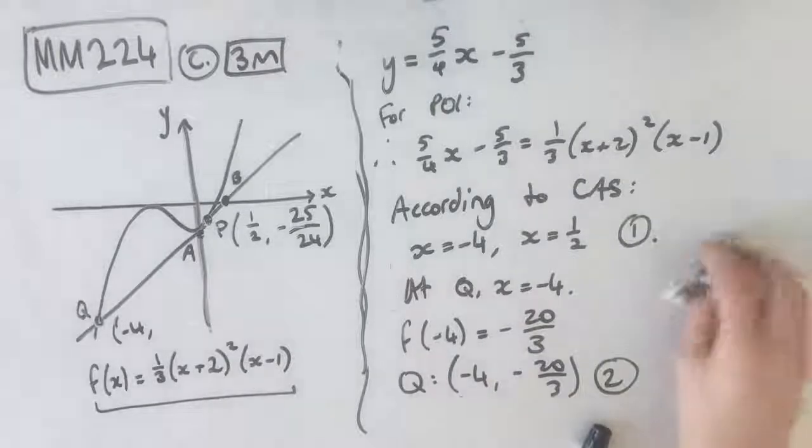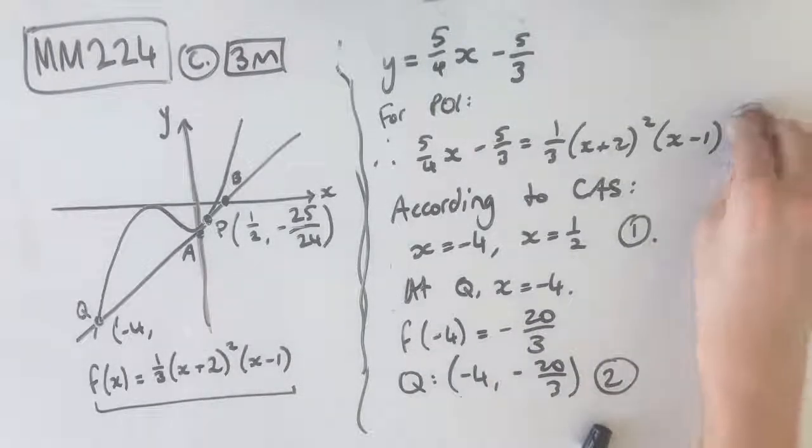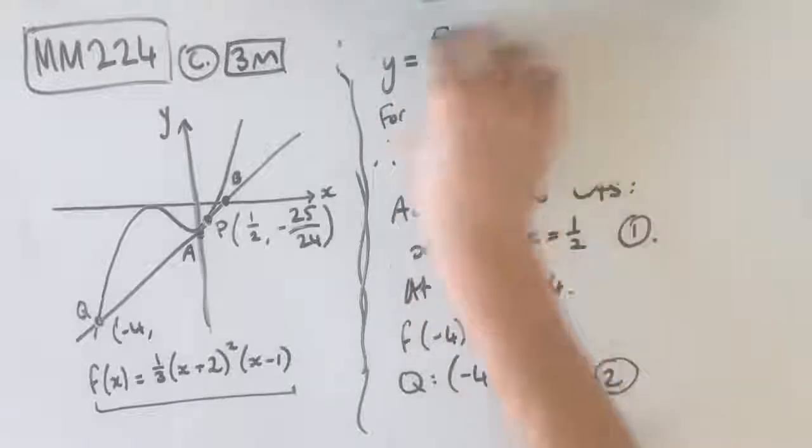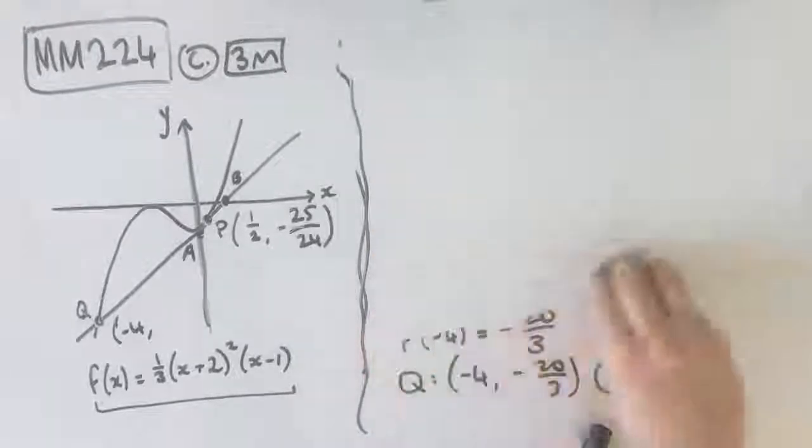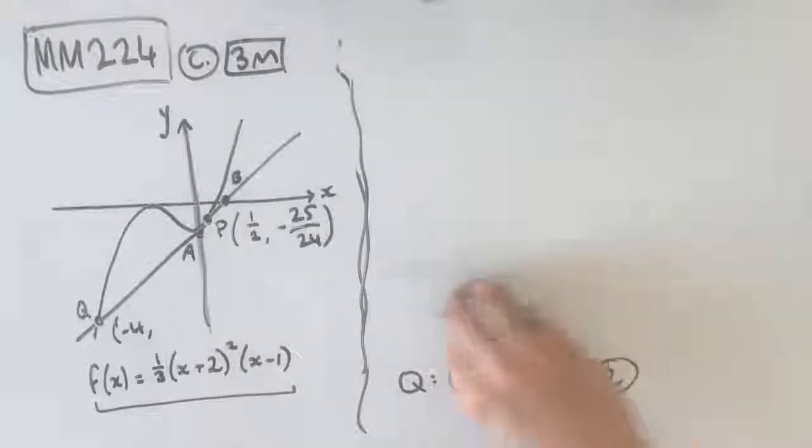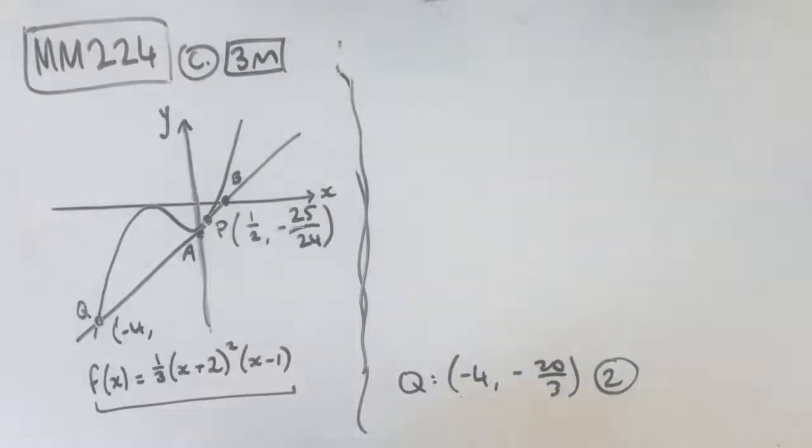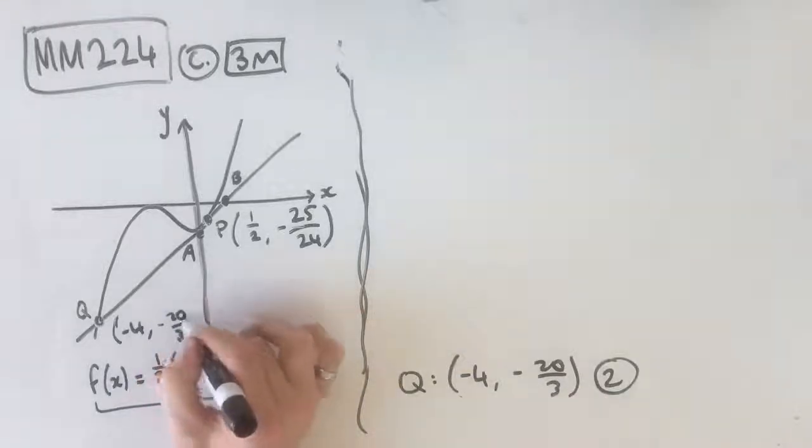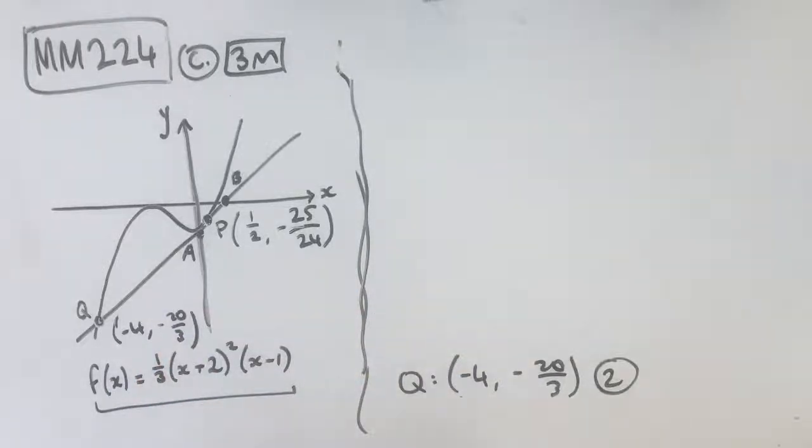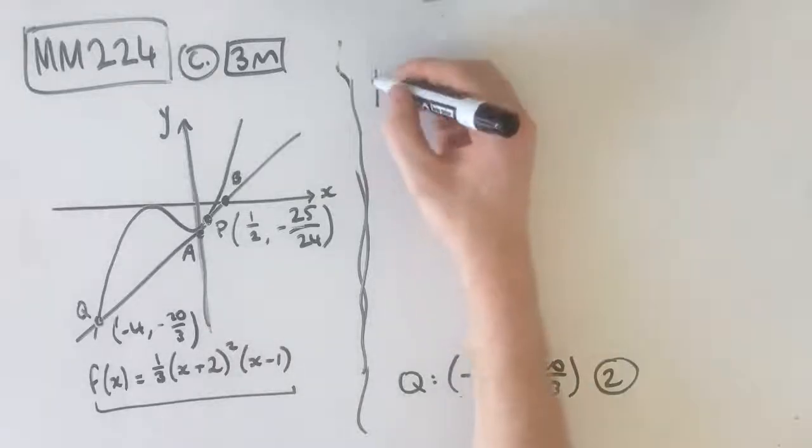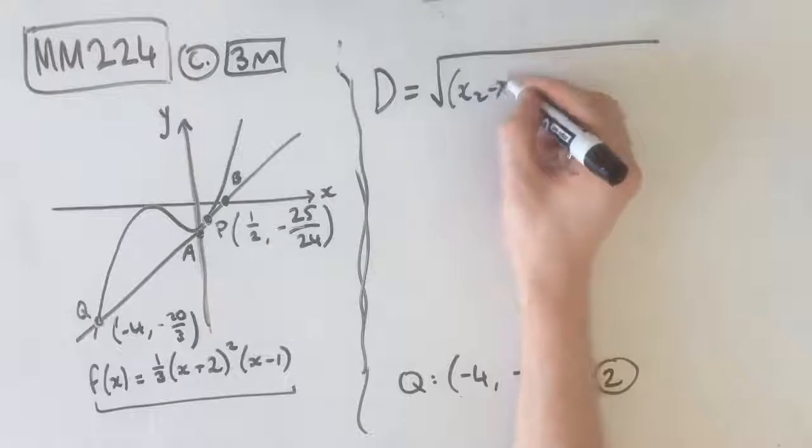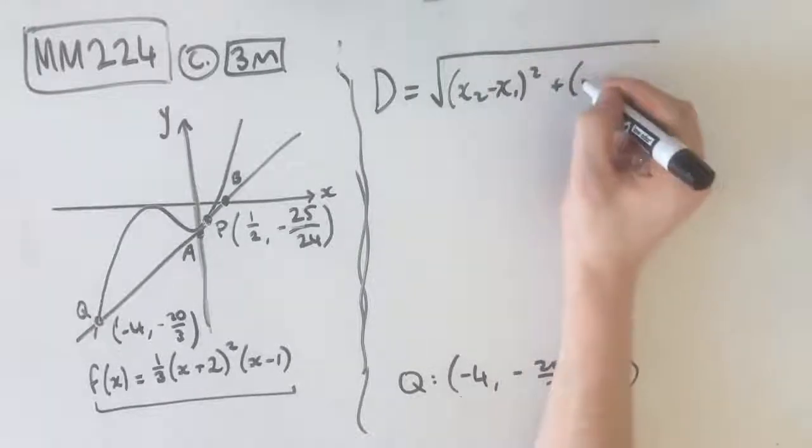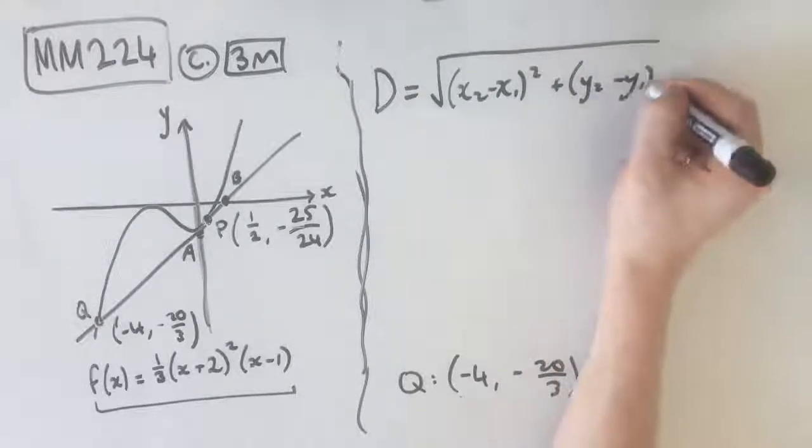So finding our Q coordinate is an integral part of this question, which means we're going to get a mark for it. So knowing that, now we can find the length between the two points. We know our coordinate here, we know our coordinate here, which is -20/3. Which means we can now find the distance or the length between them. Distance equals √[(x₂-x₁)² + (y₂-y₁)²].